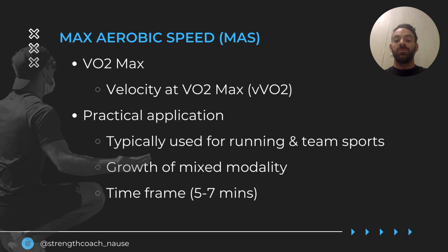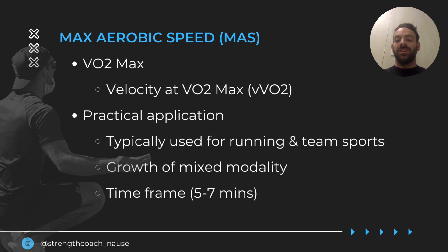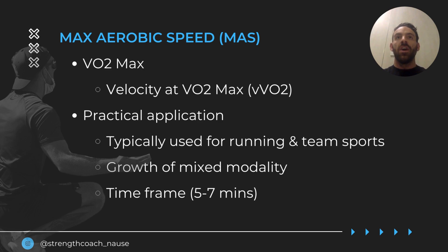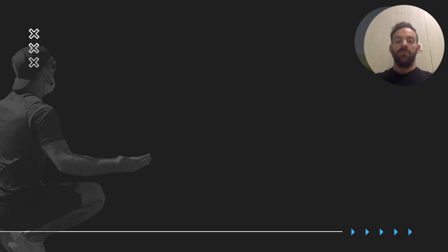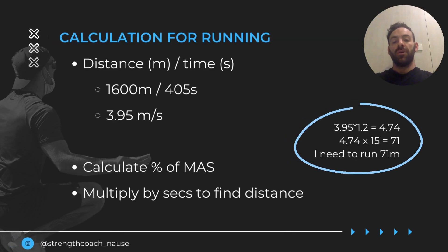In a practical setting, it's more traditionally used for team sports and running-based sports done outside — five to seven minutes — and it gives you a way to prescribe training. However, with the growth of mixed modality training — functional training, CrossFit, HYROX and similar — the question is whether we can use the same approach of calculating max aerobic speed to prescribe training, although we can use that approach with ergos such as rowing machines and C2 bikes.